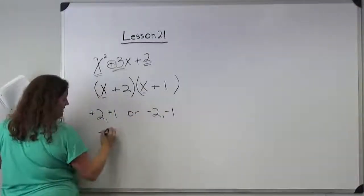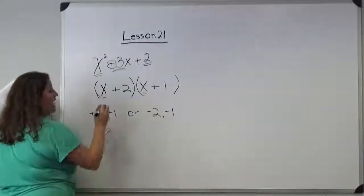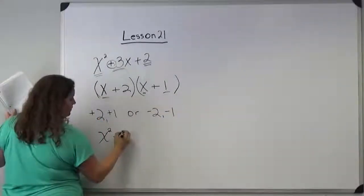First, x times x is x squared. Outer, x times positive 1 is plus 1x.